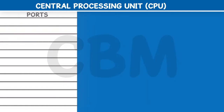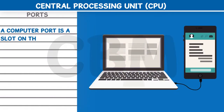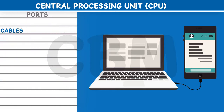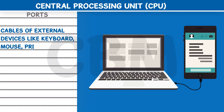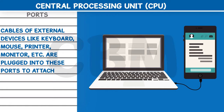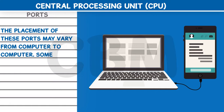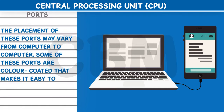Ports: a computer port is a slot on the motherboard that acts as a point of connection between a computer and an external device. Cables of external devices like keyboard, mouse, printer, monitor, etc. are plugged into these ports to attach them to a computer. The placement of these ports may vary from computer to computer. Some of these ports are color-coded, making it easy to identify a specific device to be plugged in.